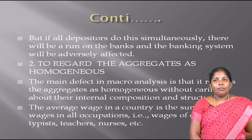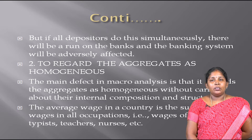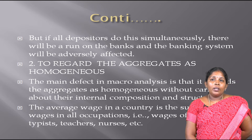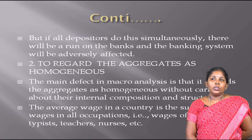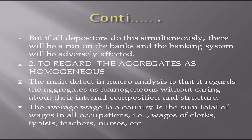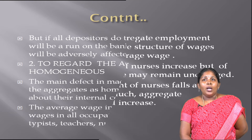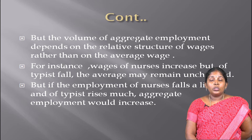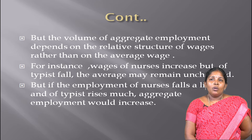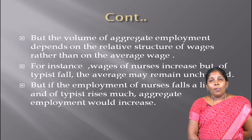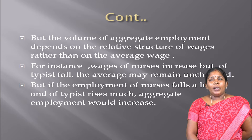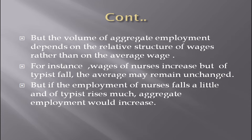Second limitation: to regard the aggregate as homogeneous. The main defect in macroeconomic analysis is that it regards the aggregate as homogeneous without caring about internal composition and structure. The average wage is the sum total of wages in all occupations — clerks, typists, teachers, nurses, etc. But the volume of aggregate employment depends on the relative structure of wages rather than on average wages. For instance, if wages of nurses increase but of typists fall, the average may remain unchanged, yet aggregate employment could increase.